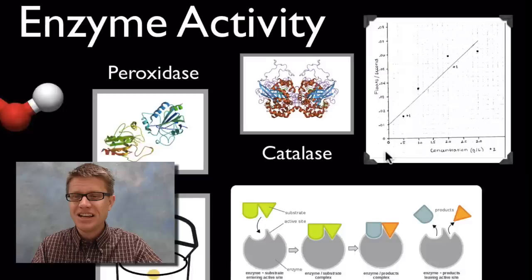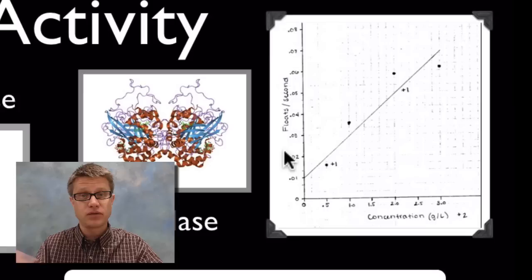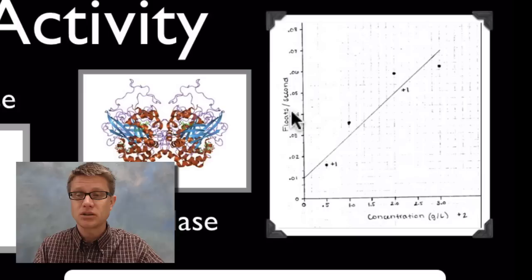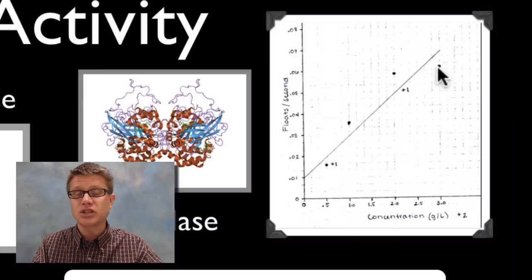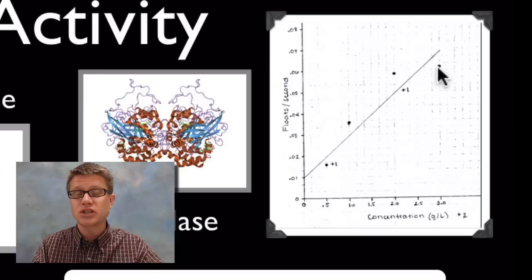We measure the rate of enzyme action. Down here we put concentration. Up here we measure how long it takes for those chads to float. I measure in floats per second. We figure out the rate of reaction. As you increase this, it eventually levels off. If you get so many enzymes, it doesn't matter. There's too many enzymes for substrates. Other things you could vary: concentration, temperature, pH and see how that affects enzyme action. And so those are the labs. I hope that was helpful.